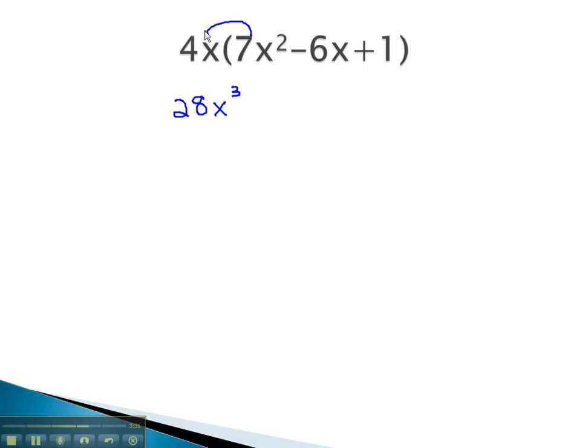Continuing to distribute, 4x times negative 6x. 4 times negative 6 is negative 24. Again, we've got 1x multiplied by another, so now we have x squared, or 2 x's multiplied together.